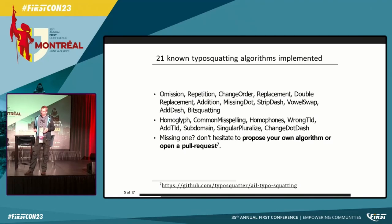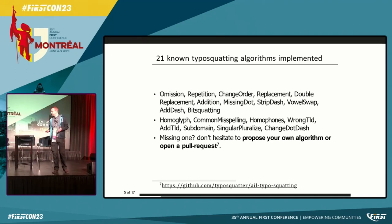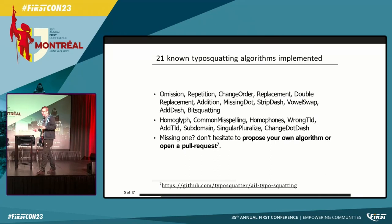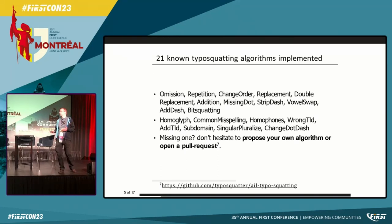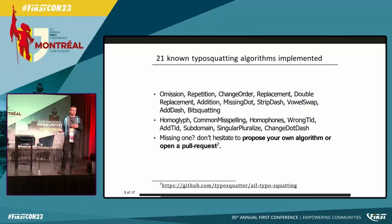If you go on GitHub at typosquatter/ail-typosquatting, you basically have that library. You can install it via PyPI — and obviously this one is not a typosquatting module in PyPI, so it's fine, you can install it, we don't do crypto mining. If you have a missing algorithm, don't hesitate to propose your own, open a pull request, or open an issue pointing to a paper or description of the technique.